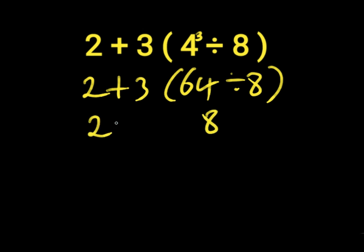And we bring down our 2 plus 3. Then 64 divided by 8 will give us 8. Then we have 2 plus 3 times 8. 2 plus 3 will give us 5. Then 5 times 8 will give us 40. So 40 is the right answer to this expression.